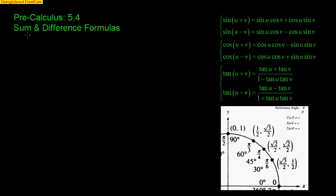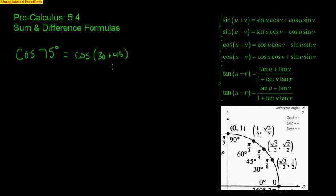Let's start off with just using the cosine of 75 degrees. We know 75 degrees is not on our unit circle, so what we want to do is use something that is on our unit circle. I'm going to split this up as the cosine of 30 plus 45. Some of you may be asking, what if I did 45 plus 30? It still works out as long as this adds up to 75. I pick 30 and 45 because those are on my unit circle. So you have to identify this is your u and this is your v.